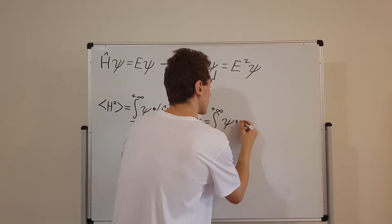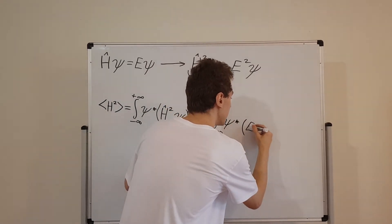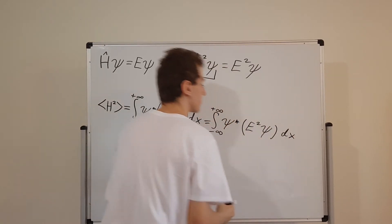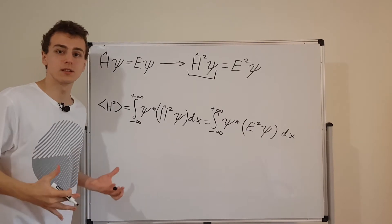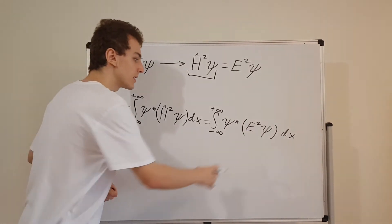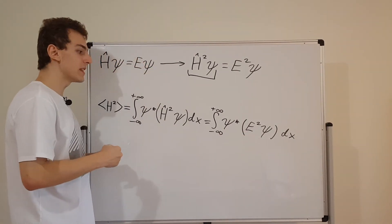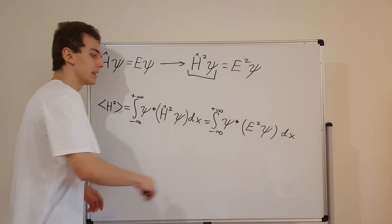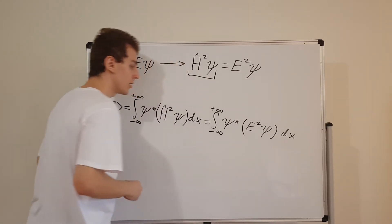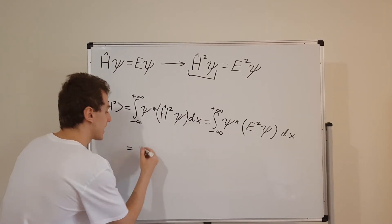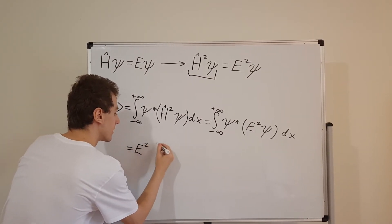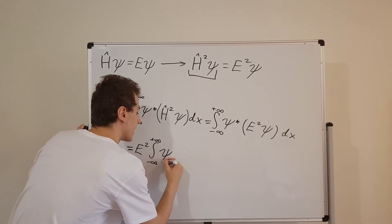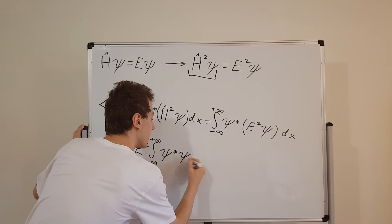That's going to give us psi star and then we're going to have E squared multiplying psi and dx. So E squared is a constant. The square of a constant is also a constant. So we can actually move this constant outside of the integral sandwich. And if we move this constant outside over here, what is that going to give us? That's going to give us E squared times the integral from minus infinity to plus infinity of psi star times psi dx.